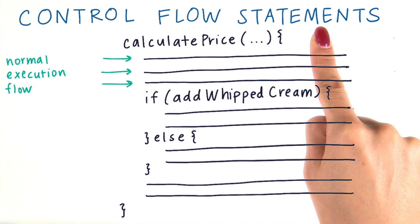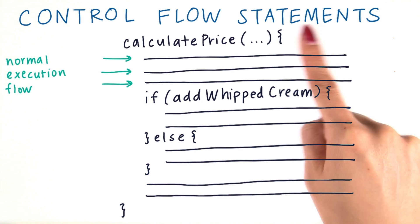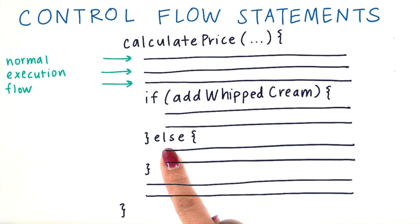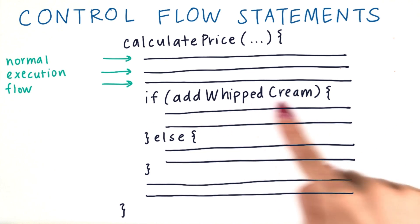If-else statements are called control flow statements. It's named this way because instead of a linear flow of code where one line of code is being executed after another, the control flow statement actually allows us to jump to different parts of the code based on certain conditions.